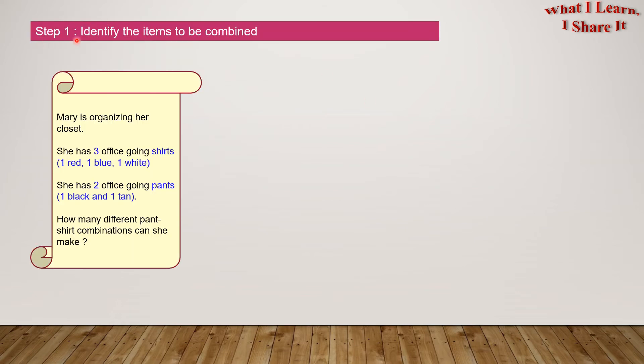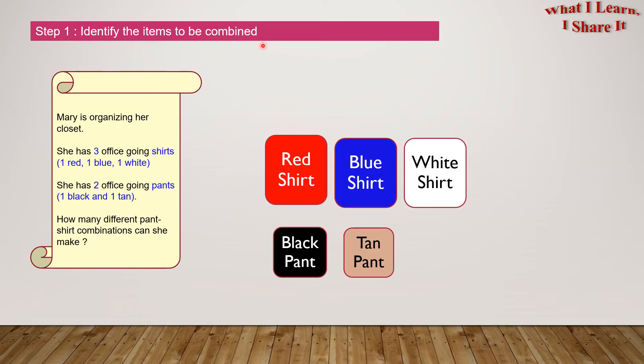Step 1: Identify the items to be combined. So we know that we have to combine one shirt with one pant.